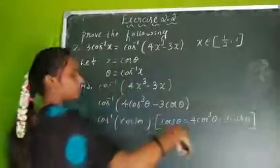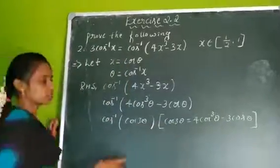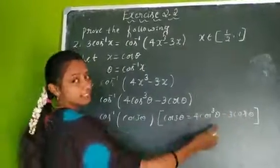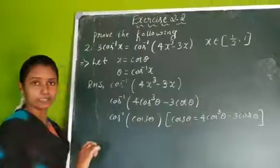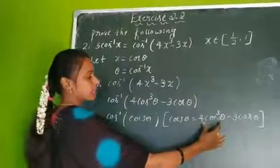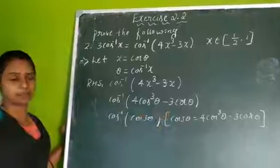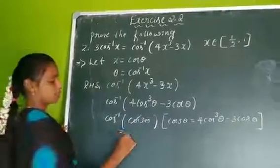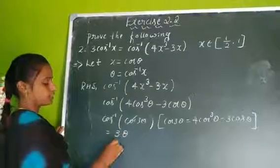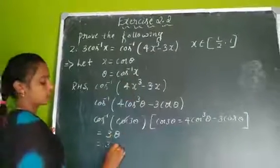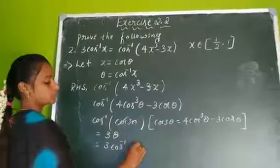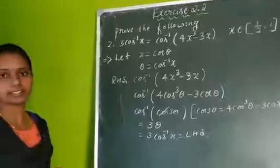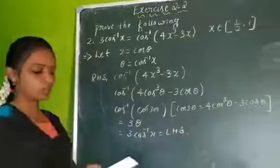For sine, the triple angle formula is 3 sine theta minus 4 sine cube theta. For cosine, it starts with the second term minus the first: 4 cos cube theta minus 3 cos theta. Now cos inverse and cos cancel, remaining is 3 theta. And 3 theta = 3 cos inverse x, which is the LHS. Easy one.